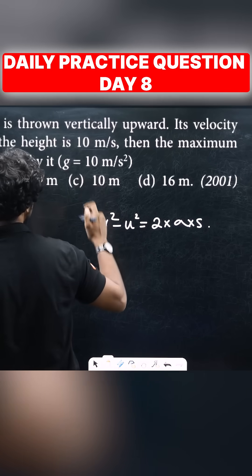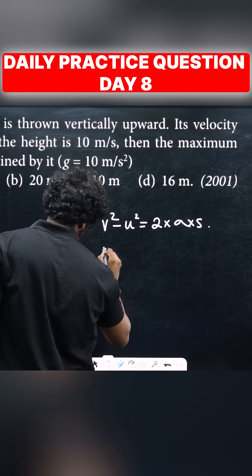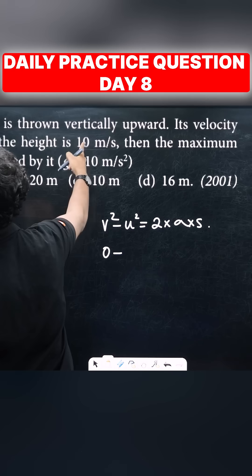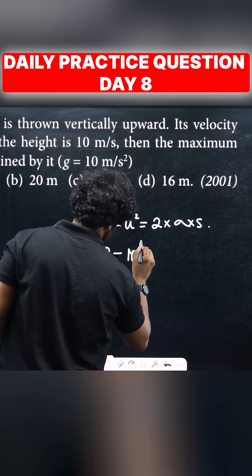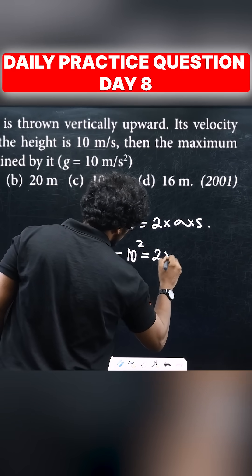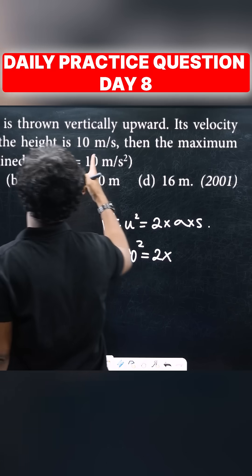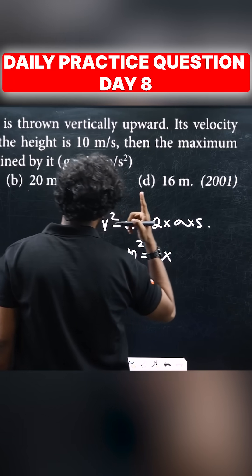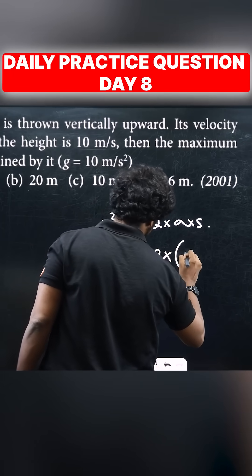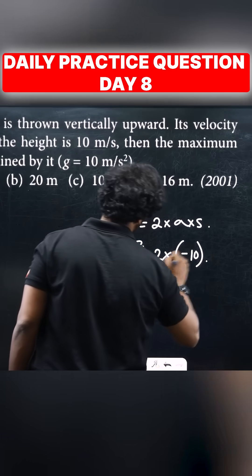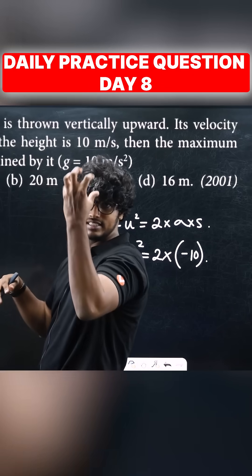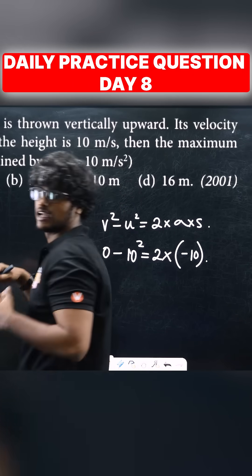V squared means 0, minus u squared means 10 meters per second. So 10 squared equals 2 into g, which is 10 meters per second squared, and that is negative.